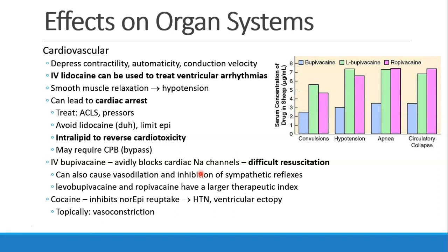Next, let's talk about cardiovascular side effects. Since local anesthetics bind to sodium channels, they can have an effect on the conduction of the heart. We see depressed contractility, automaticity, and conduction velocity. That's why we use IV lidocaine to treat ventricular arrhythmias — it slows down conduction in the heart and helps break some of those ventricular arrhythmias. Lidocaine can also help smooth muscles relax, which causes some hypotension. At high doses, local anesthetics will lead to cardiac arrest, and the treatment is ACLS and pressors if needed.